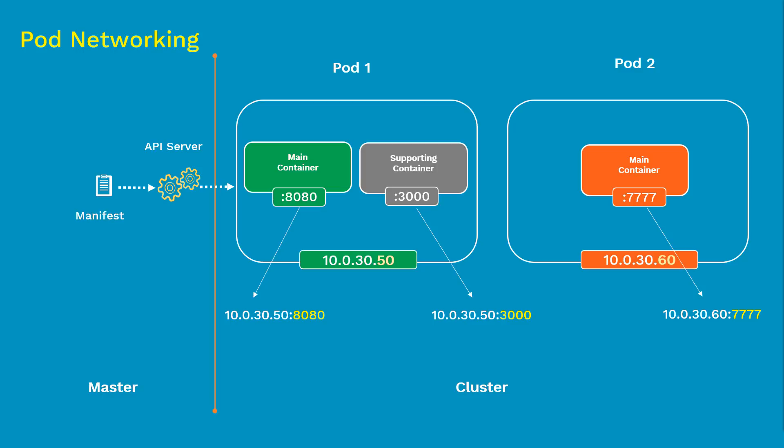To access the container inside Pod 2 we use the Pod 2 IP address and the port number of the container. Containers within the same pod not only share the same IP address, but also share access to the same volumes, same cgroup limits, and even the same IPC namespace — that is something very important to note.